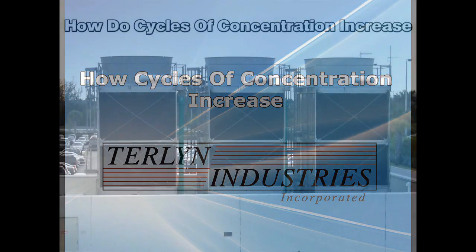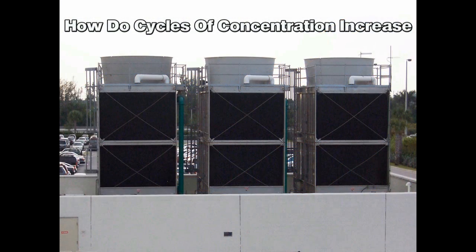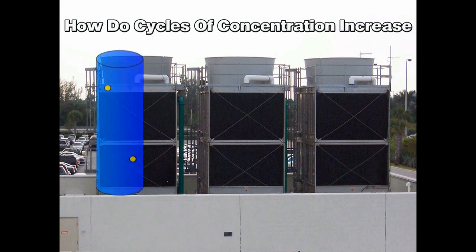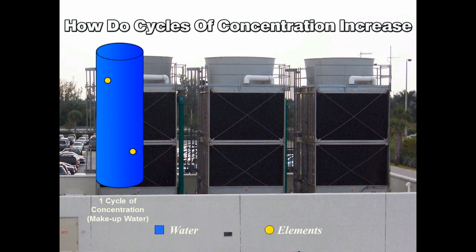How do cycles of concentration increase? We start by filling a cooling tower with fresh makeup water. Then we measure the level of elements in that water to determine its concentration, represented here by the two yellow dots in the tower.